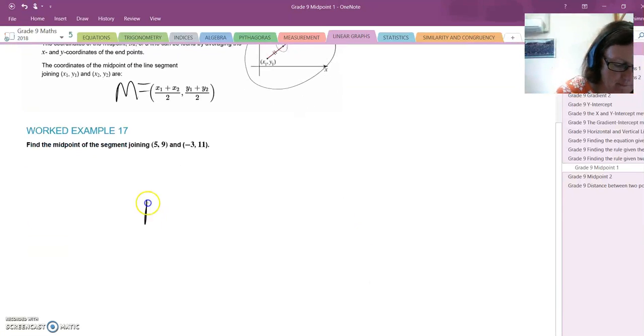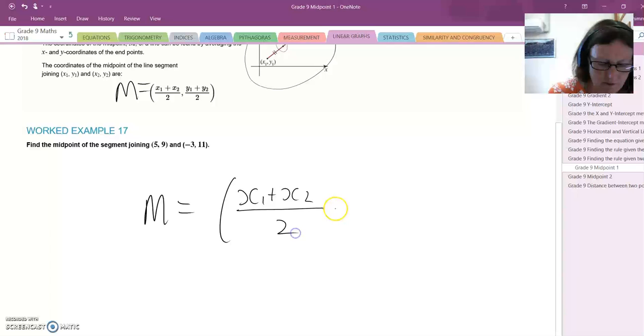Let's do an example. I write my formula down first. You must get into the habit of always writing a formula down first. With the points here, let's call 1.1 and 1.2.